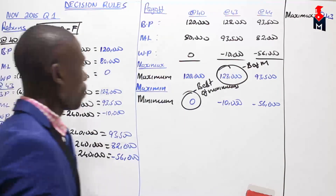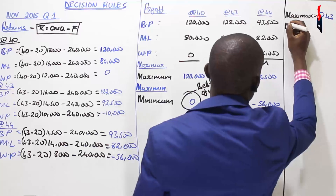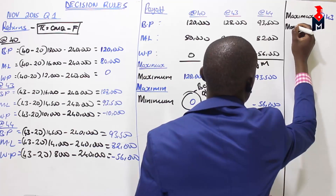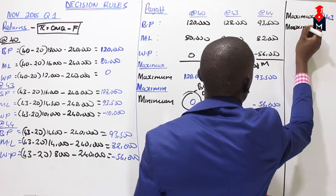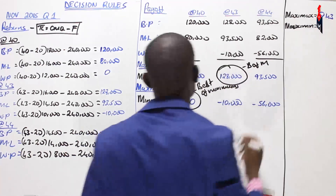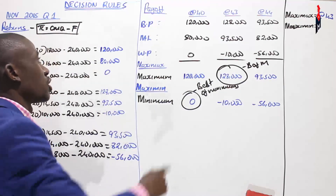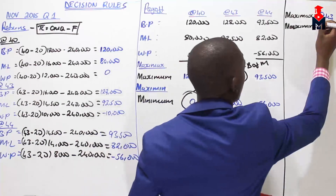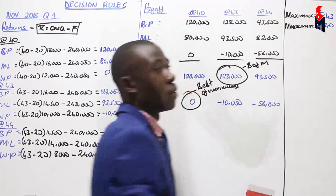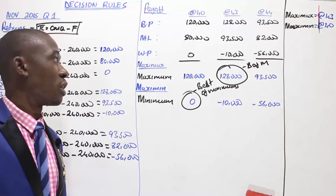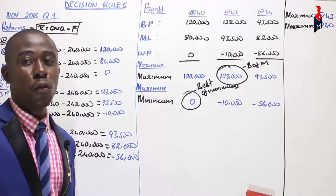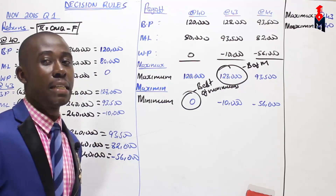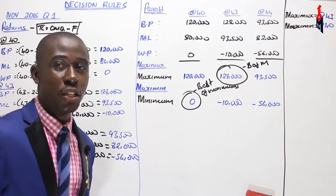So this company, if they were to advise using MaxiMin, the selling price here is 40 shillings. They are going to adopt a selling price of 40 shillings, having worked it out using the MaxiMin decision rule.